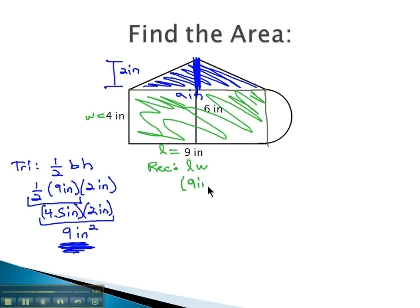So we'll replace the length with 9 inches, and the width with 4 inches. Simple multiplication, 9 times 4 is 36 square inches in area in the rectangle.